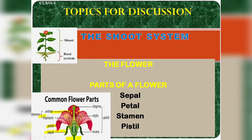The filament supports the anther, and from the anther you can get pollen grains.